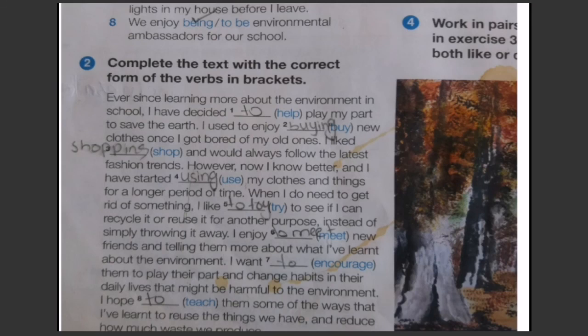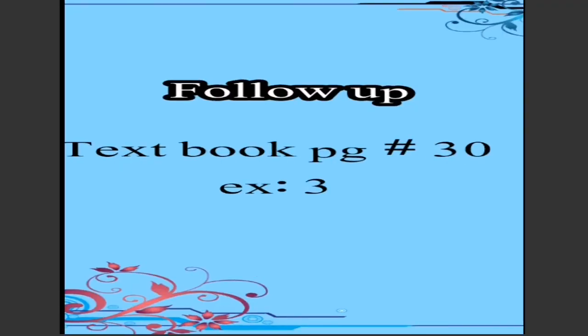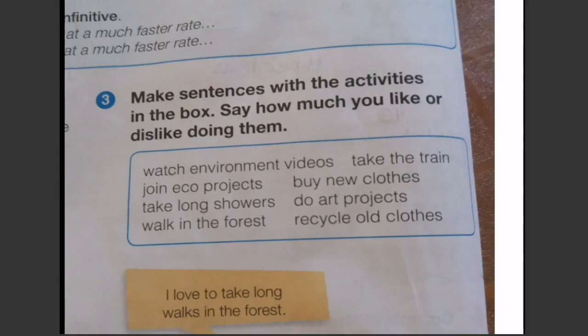Next: gerunds and infinitives, textbook page number 30, exercise number 3. You will solve it by yourself and send it to your teacher. Make sentences with the activities in the box, saying how much you like or dislike doing them. According to those words and phrases, you will make the sentences.